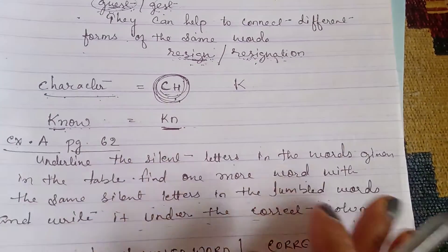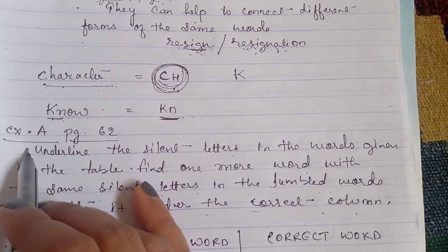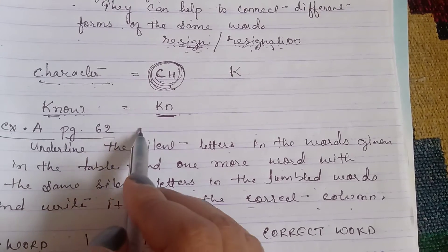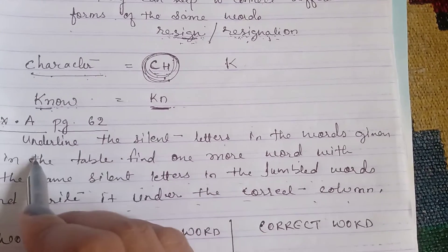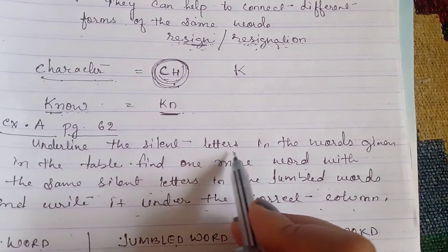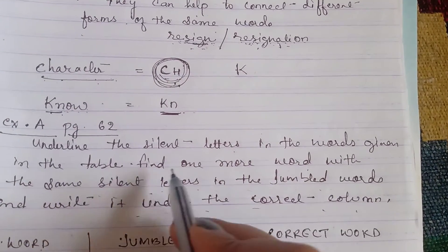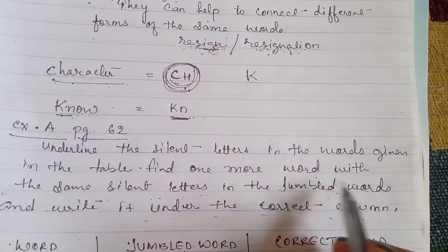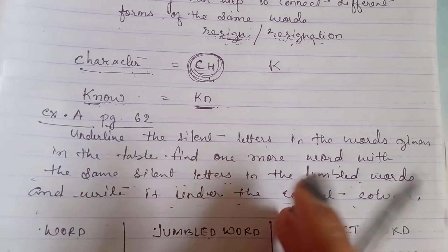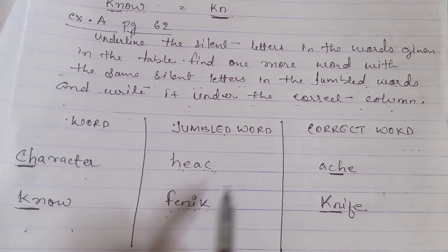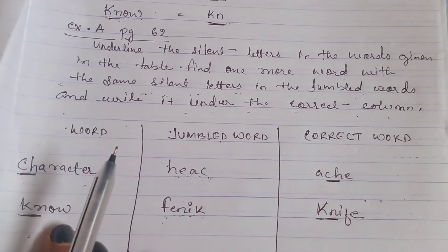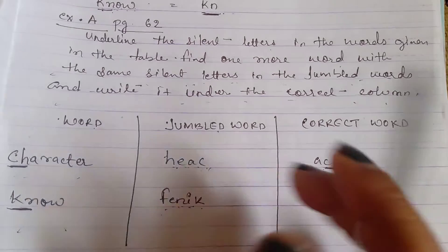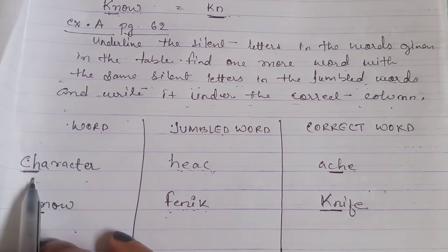Now let's do Exercise A, which is given on page 62 of Smart English. Underline the silent letters in the words given in the table, then find one more word with the same silent letters from the jumbled words and write it under the correct column. Three columns are given: the words, the jumbled words, and where we write the correct words.